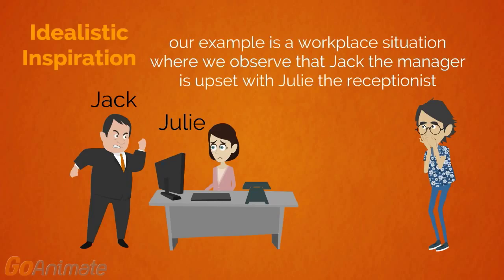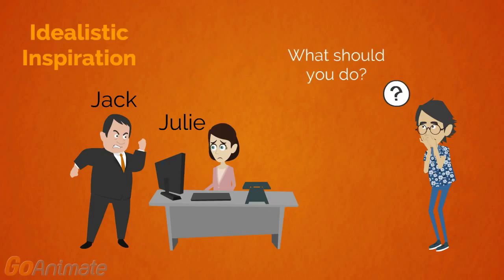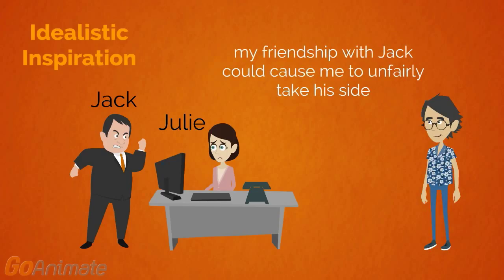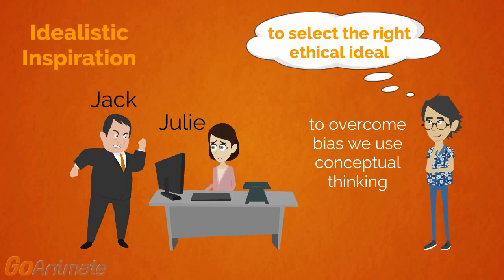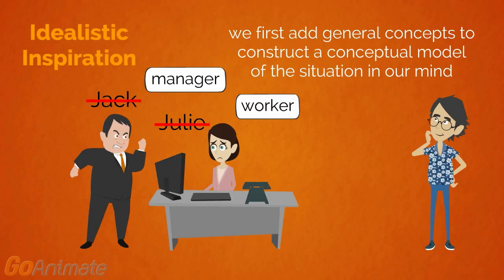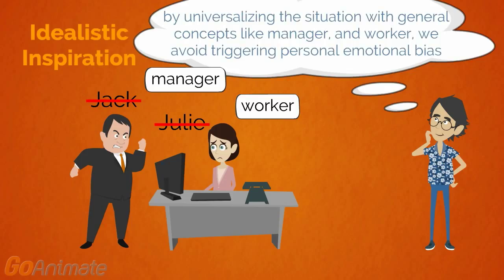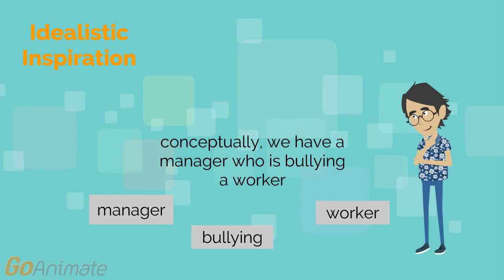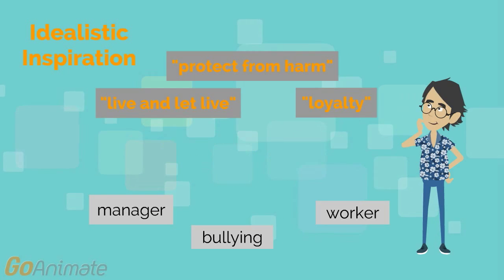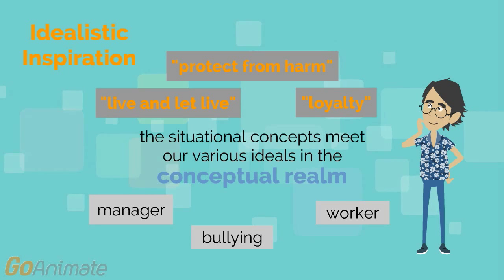Our example is a workplace situation where we observe that Jack the manager is upset with Julie the receptionist. What should you do? My friendship with Jack could cause me to unfairly take his side. To overcome bias we use conceptual thinking to select the right ethical ideal that will guide our action. We first add general concepts to construct a conceptual model of the situation in our mind. By universalizing the situation with general concepts like manager and worker, we avoid triggering personal emotional bias. We add that the manager's behavior should be termed bullying. Conceptually, we have a manager who is bullying a worker. The situational concepts meet our various ideals in the conceptual realm.